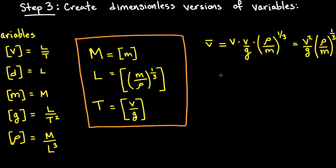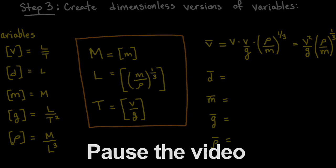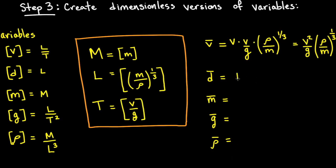Now you try. Find d bar, m bar, g bar, and rho bar. Pause the video here. You should have found that d bar is d times rho over m to the one-third, m bar is 1, g bar is v squared over g times rho over m to the one-third, and rho bar is 1.